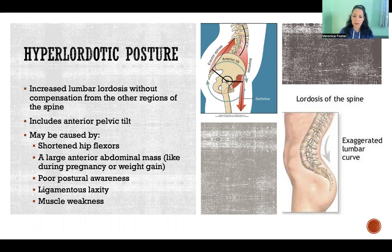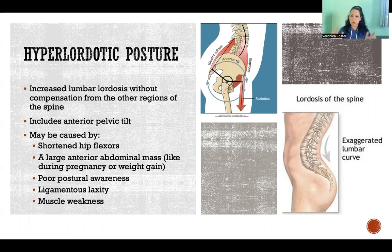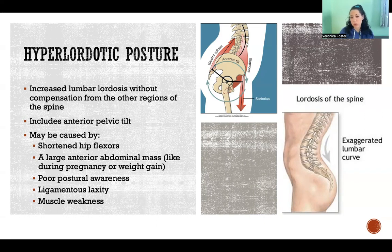It could also be caused by a large anterior abdominal mass, which can mean lots of things. Most commonly, that can occur during pregnancy — that would be an example of a large anterior abdominal mass. It could also be somebody carrying weight in the abdomen, someone with a large abdominal belly. Essentially, anything shifting the center of mass of the trunk in the forward direction can lead to hyperlordotic posture. It could also be a matter of poor postural awareness — just slipping into this posture without being aware of the need to correct it.